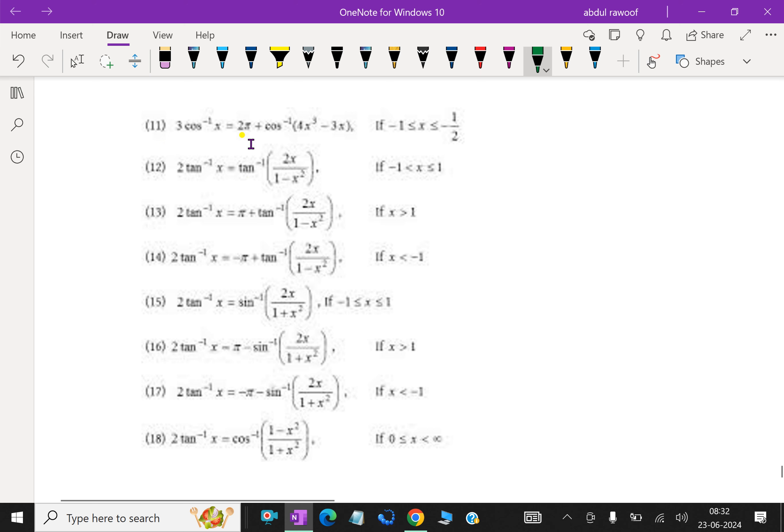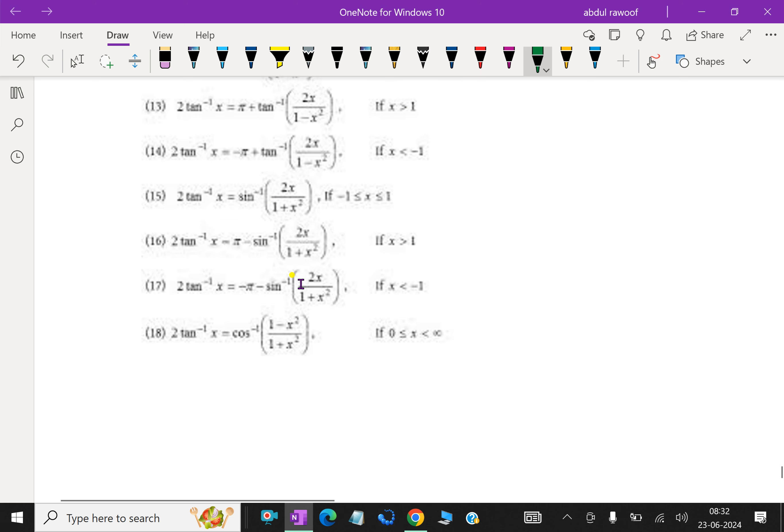3 cos inverse x is 2 pi plus cos inverse of 4x cube minus 3x. Like this, we can express 2 tan inverse x as tan inverse of 2x over 1 minus x square. And 2 tan inverse x is pi plus tan inverse 2x over 1 minus x square if x is greater than 1. You can read these things and it will be useful for problem solving.